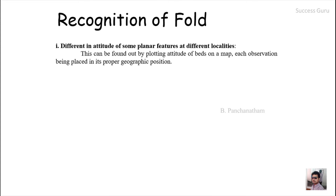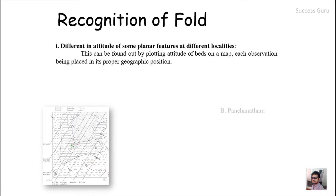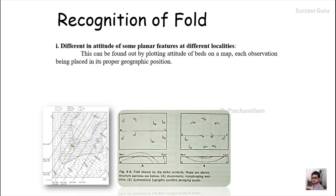The first indicator is the difference in attitude of planar features at different locations. If a fold is present, we will see a change in the attitude of beds. In an anticline the beds dip in opposite directions — on one side the dip is towards the east and on the other side towards the west. We can also use maps where repeating strike values indicate the presence of a fold.